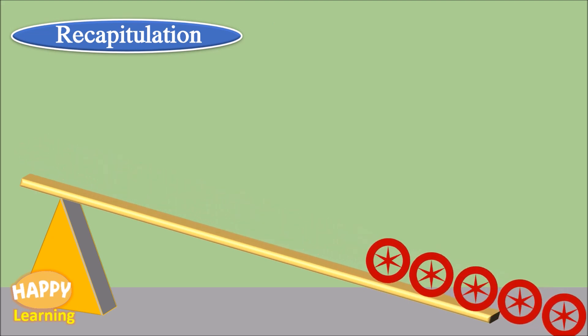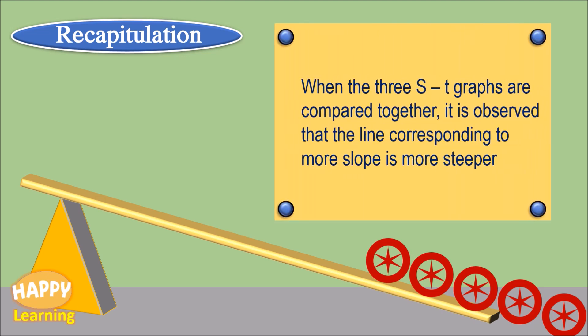Point 5. When the three s-t graphs are compared together it is observed that the line corresponding to more slope is more steeper.